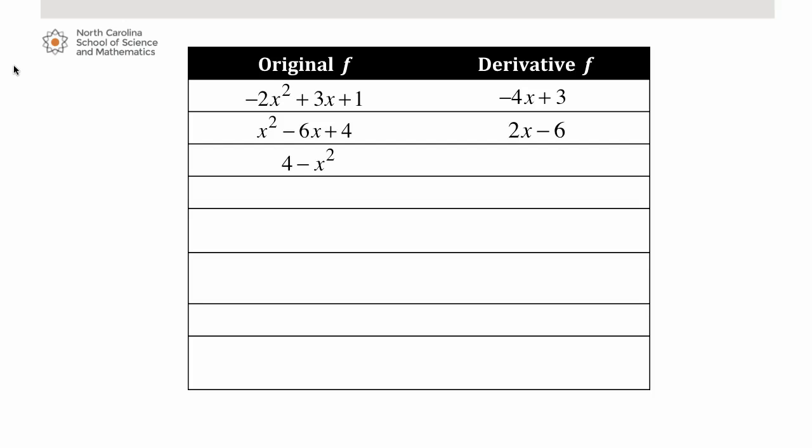If you have an original function, 4 minus x squared, its derivative is negative 2x. If you simply have x cubed, that derivative is 3x squared. The derivative of 6 minus 2 thirds x is just going to be negative 2 thirds.